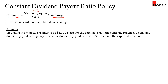In this example, Cloud Gold Incorporated expects earnings of $4 a share for the coming year. If the company practices a constant dividend payout ratio policy where the ratio is 30%, the expected dividend is simply 30% multiplied by the earnings per share of $4, which equals $1.20 a share. So this is pretty straightforward.